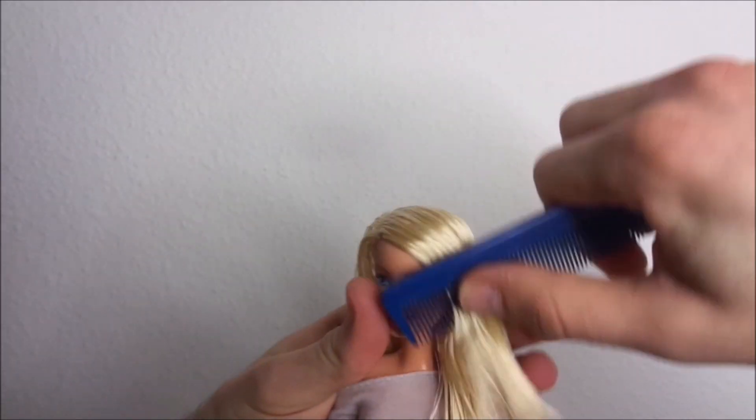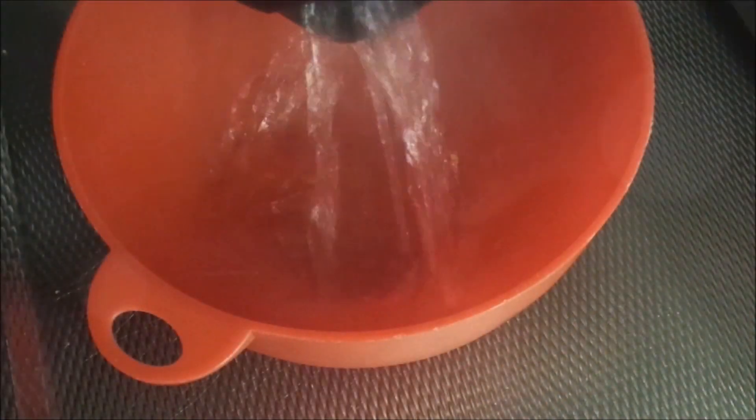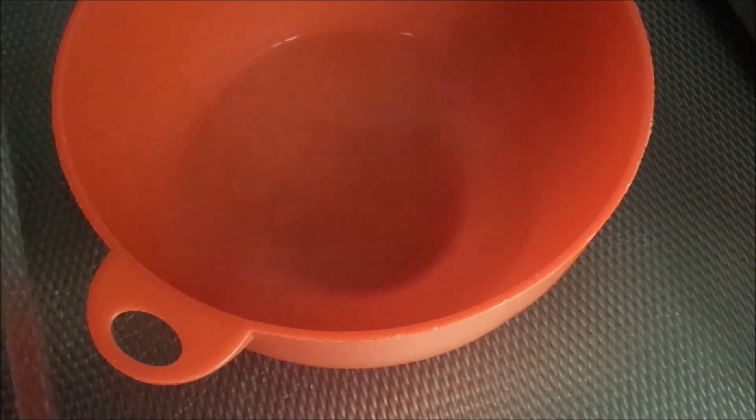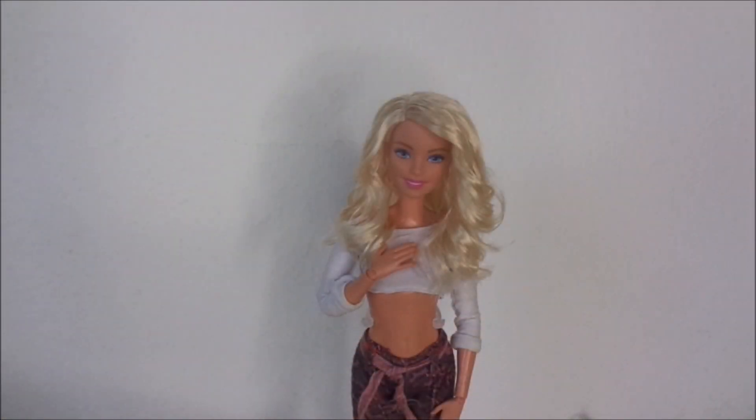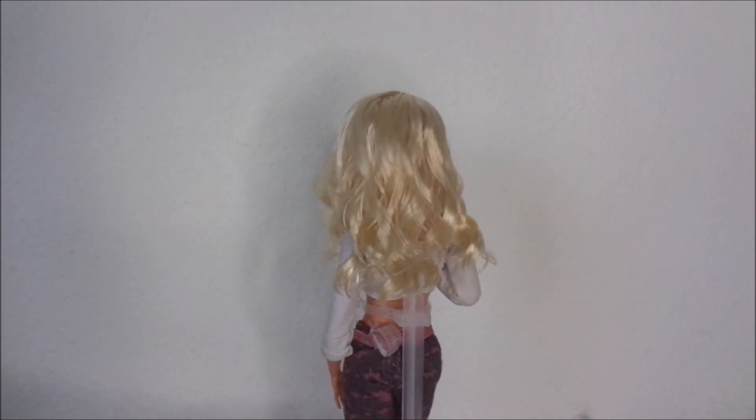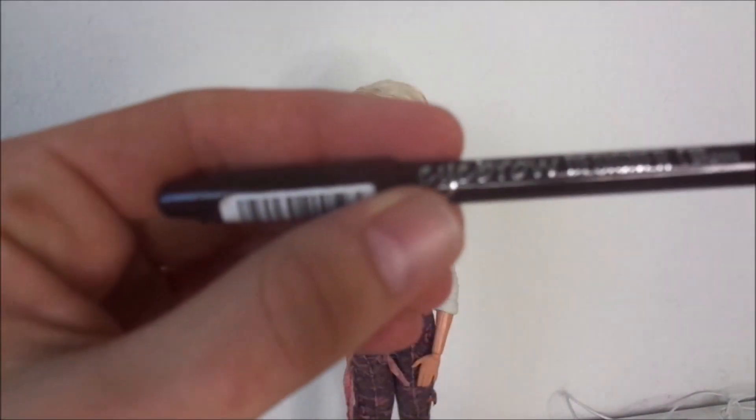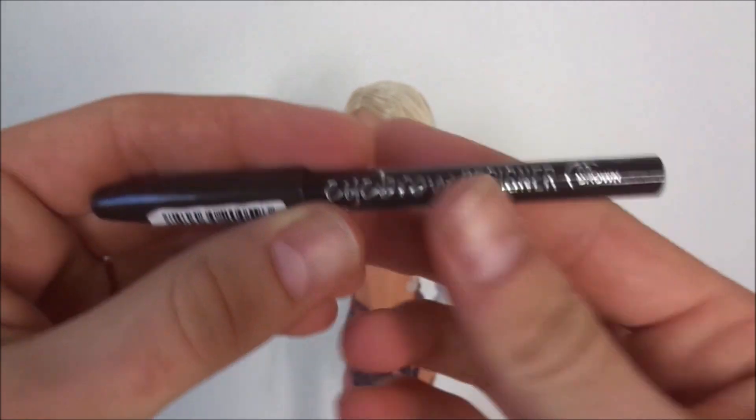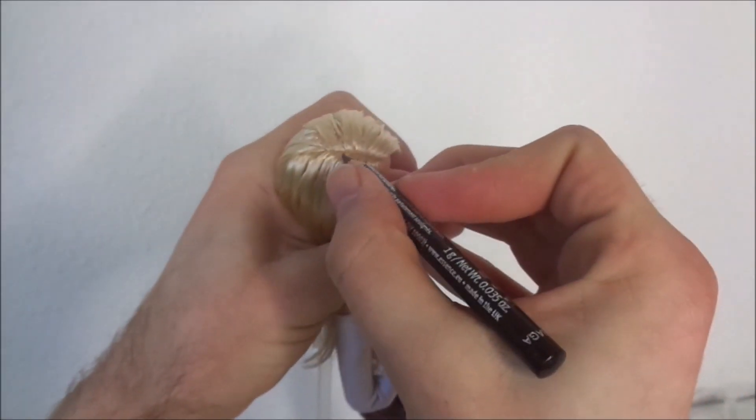And keep that in place with a rubber band so I can boil wash the hair. After that I also added some curl to the hair. Then I take this eyebrow pencil and simply start coloring in the roots.